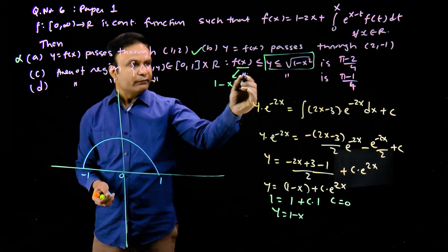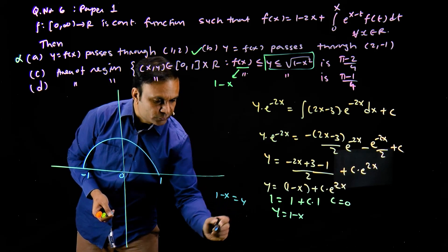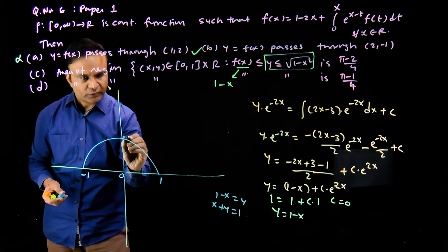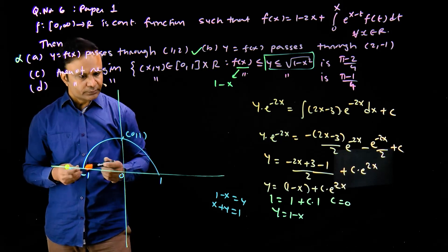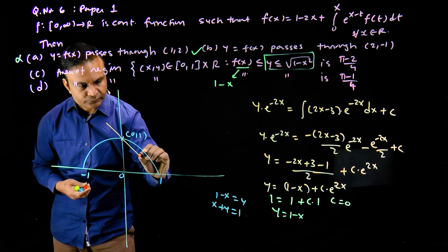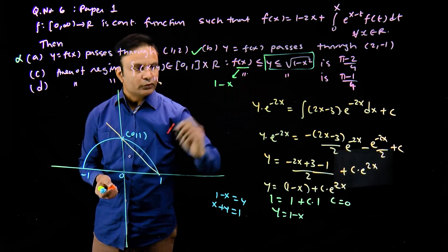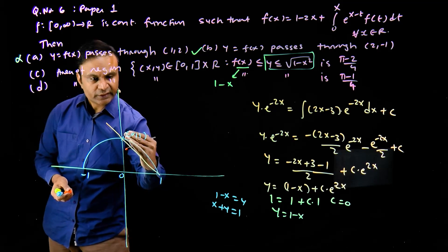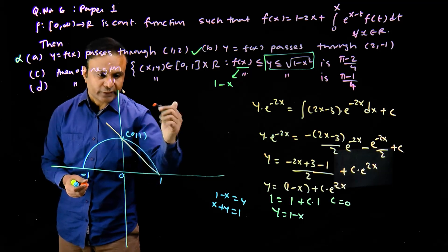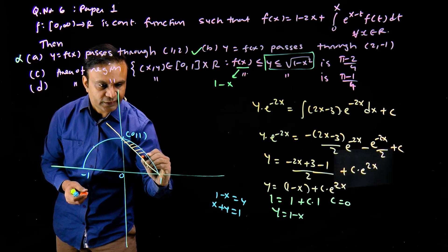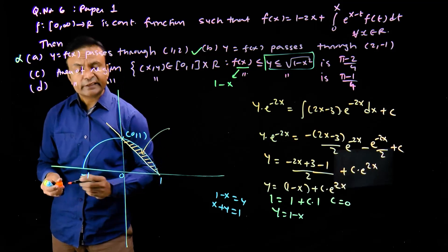For the lower bound, taking 1 - x = y gives the line x + y = 1, passing through (0, 1) and (1, 0). We need y ≥ 1 - x, which is the region above this line. The common region is inside the circle and above the line — this is the region whose area we need. No integration is required.